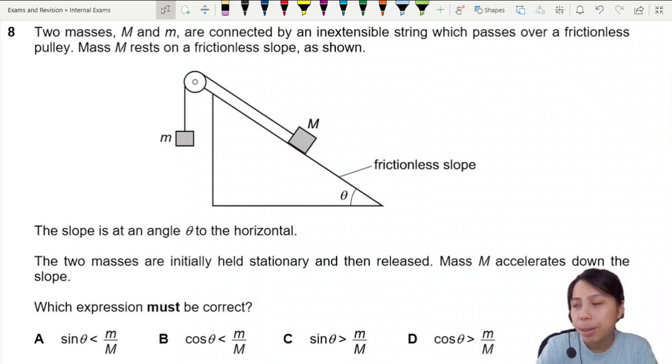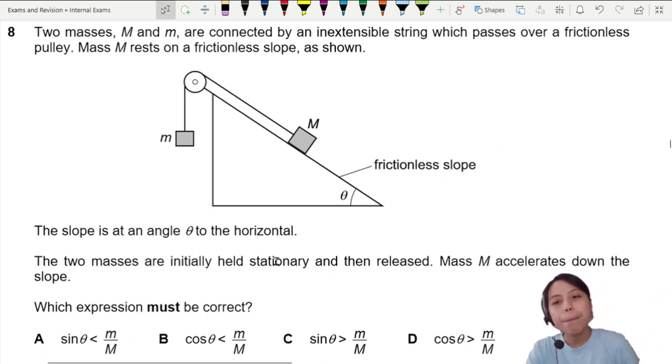Two masses, M and m, are connected by an inextensible string which passes over a frictionless pulley. Mass M rests on a frictionless slope, so we don't worry about friction here. No extra forces. The slope is at an angle theta to horizontal. Two masses are initially held stationary and then released. Mass M accelerates down the slope. Which expression must be correct?